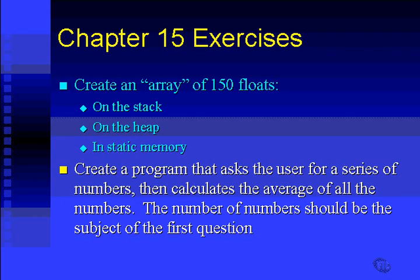Next, create a program that asks a user for a series of numbers and then calculates the average of all the numbers it got. The number of numbers they're going to enter should be the subject of the first question. The program will say 'how many numbers do you wish to enter?' — you might say nine, and then the program will ask for nine numbers and give you the average of those nine numbers.